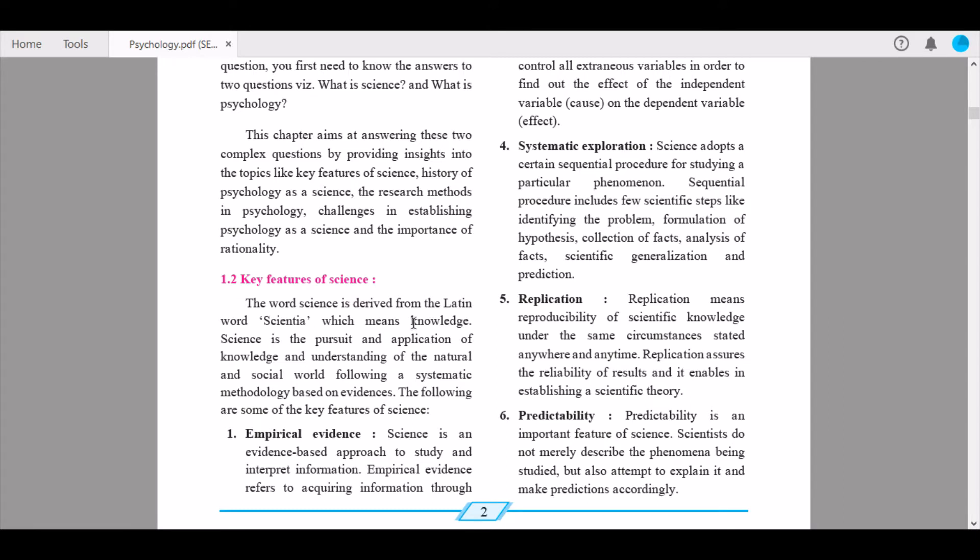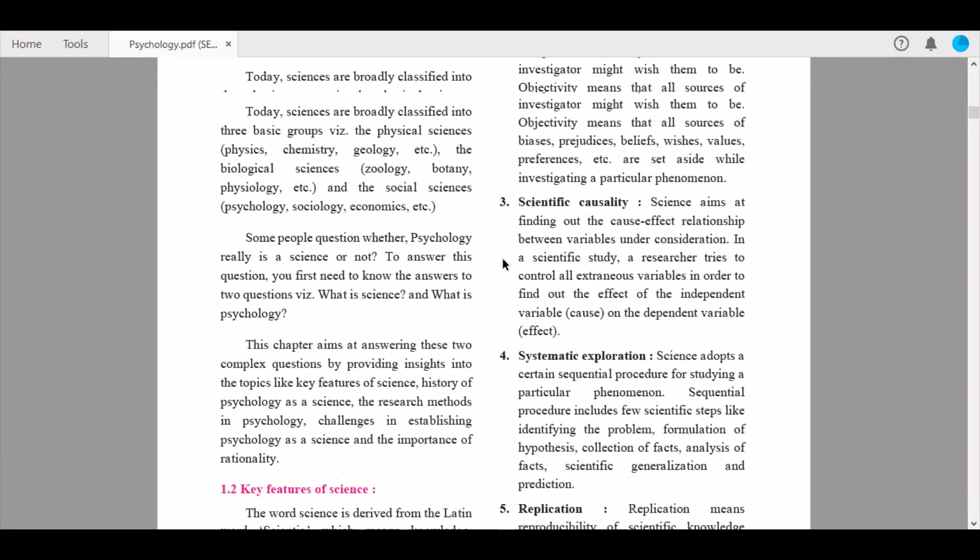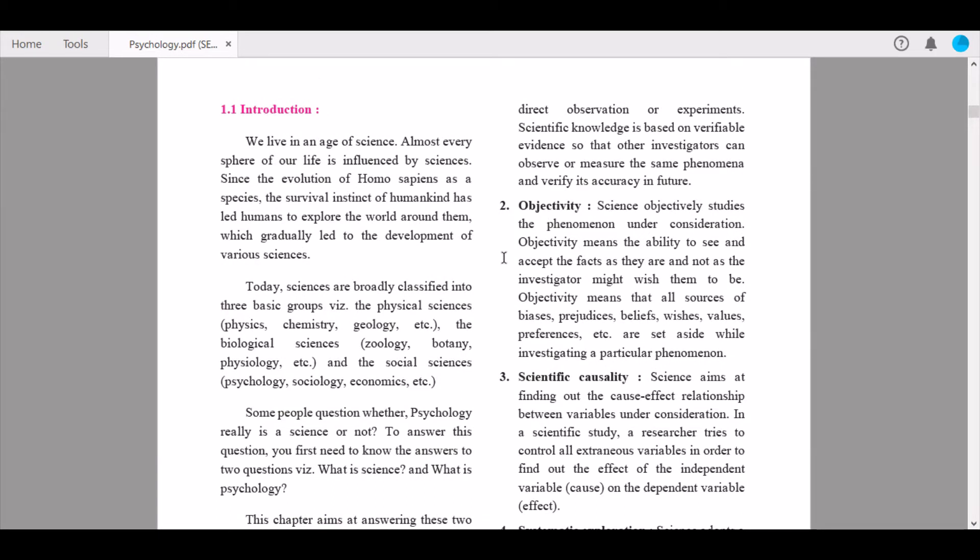The first key feature is empirical evidence. Science is an evidence-based approach to study and interpret information. Empirical evidence refers to acquiring information through direct observation or experiments. Scientific knowledge is based on verifiable evidence so that other investigators can observe or measure the same phenomena and verify its accuracy in the future.